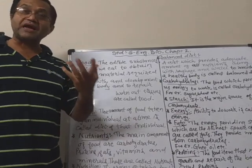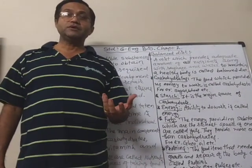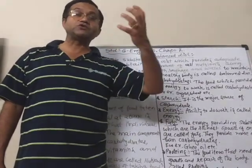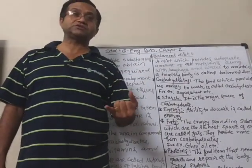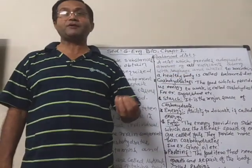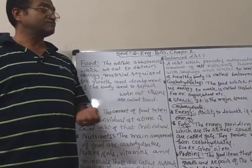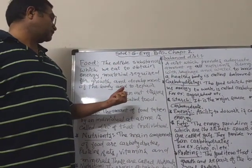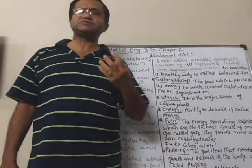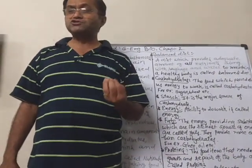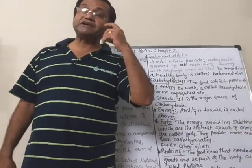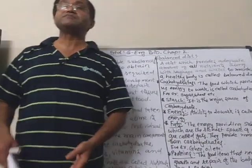We need energy to do different types of work. We have to grow, so for growth there must be some special types of food items required for the development of the body, and for the repair of worn out tissues, because every day lots of tissues are getting damaged and need to be repaired.